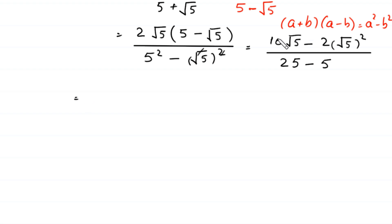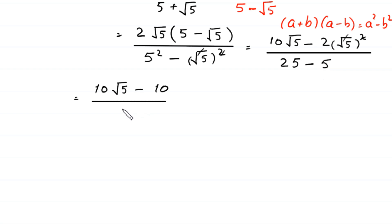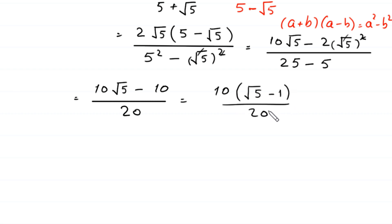Next, 10 times root 5 minus 2 times root 5 squared: the square cancels with the square root, and 2 times 5 becomes 10, divided by 25 minus 5 which is 20. From the two numerator terms we factor out 10, leaving root 5 minus 1 divided by 20. This 10 cancels with 20, so we get the value of x equal to root 5 minus 1 divided by 2.